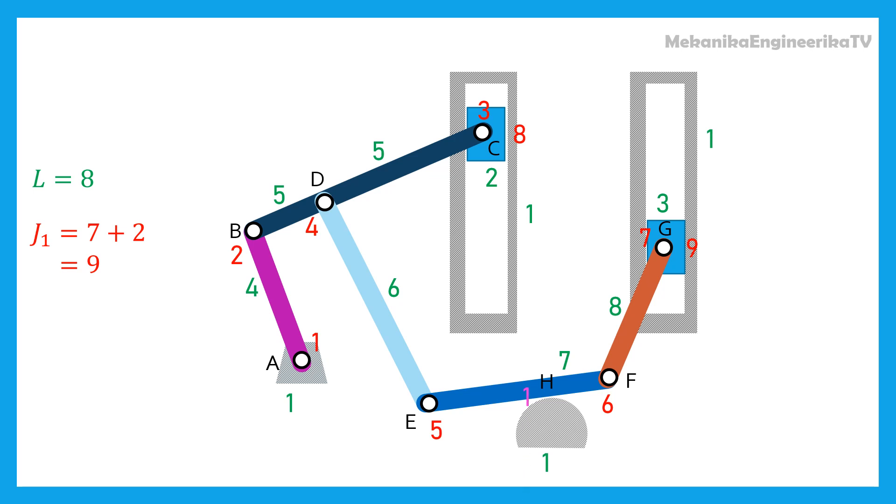There is one simple contact in H connecting the bar EF to the ground. Thus, J2 is equal to 1.